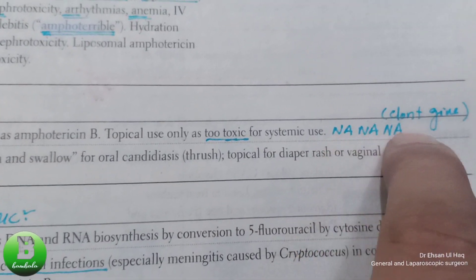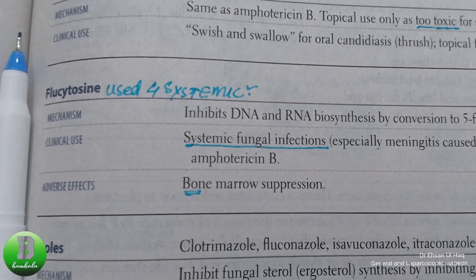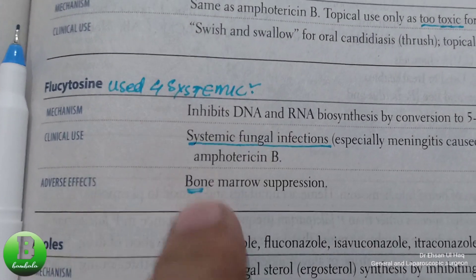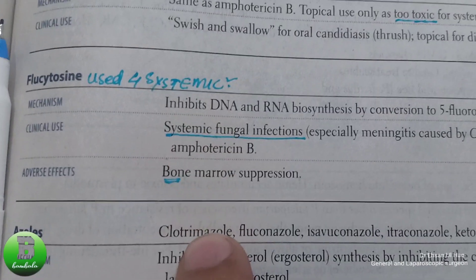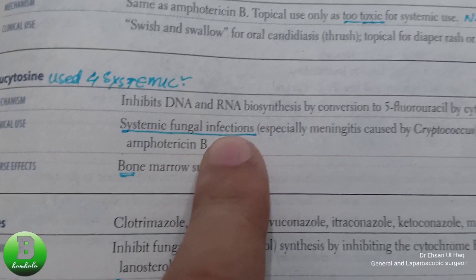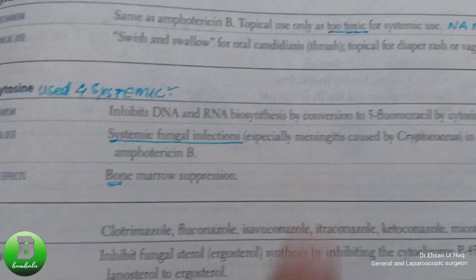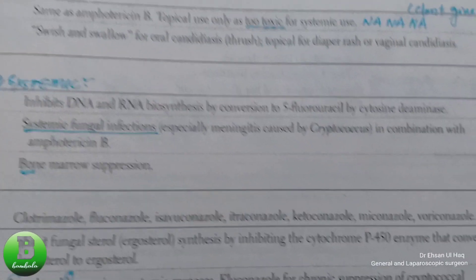Flucytosine inhibits DNA and RNA synthesis — that is its mechanism of action.